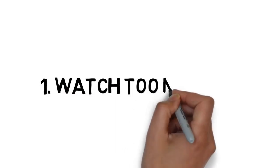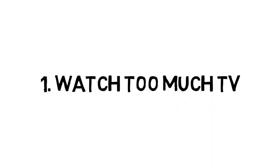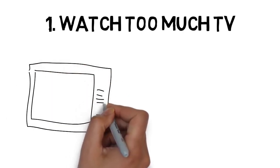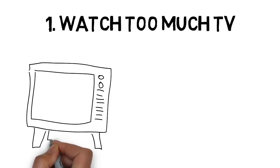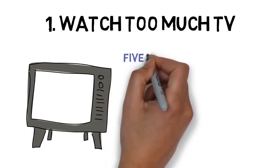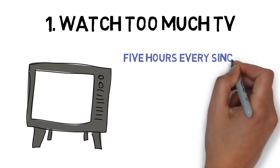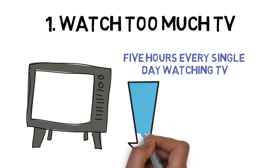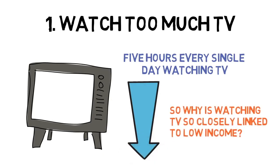1. Watch too much TV. A few years ago, researchers discovered that watching TV is significantly correlated with low income, so much so that over 34% of families making less than $10,000 a year spend upwards of 5 hours every single day watching TV. But when a family's income increases, the percent watching more than 5 hours a day decreases, dropping to as low as 1.1% for people making over $150,000 a year. So why is watching TV so closely linked to low income?